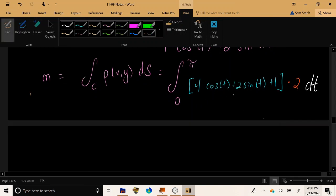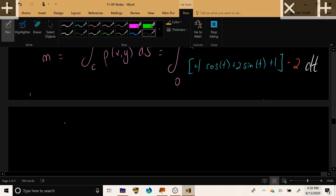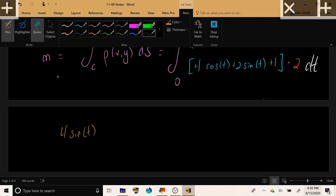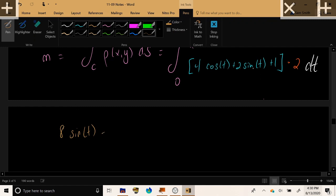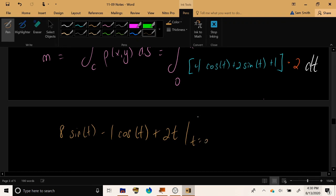Alright, so integrating this quantity, we have anti-derivative of 4 sine t multiplied by 2. So, that would be 8 in total. And then, negative 2 cosine t multiplied by 2. That would be 4 cosine t. Plus, integral of 1 times t multiplied by 2, which would be 2t, evaluated from 0 to pi.